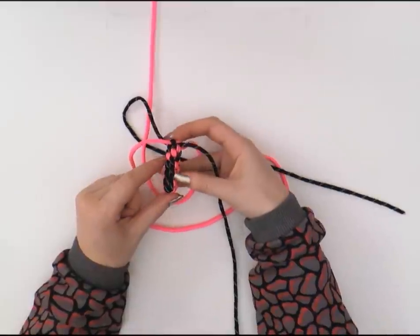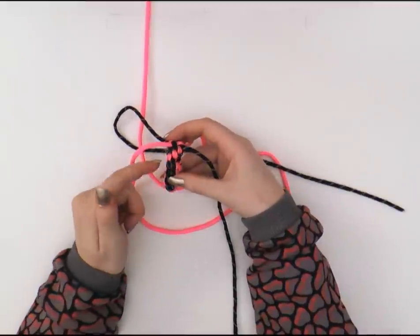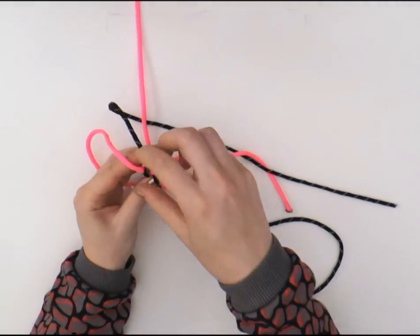So, this is spiraling, I guess, to the right. If you want it to spiral to the left, all you have to do is to do a box stitch.